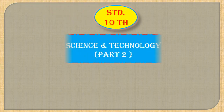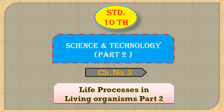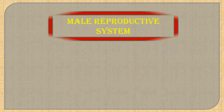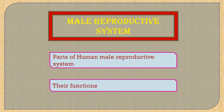Today, we are going to learn about a chapter from Standard 10, Subject Science and Technology, Part 2, Chapter number 3, that is Life Processes in Living Organisms, Part 2. From this chapter, we are going to study about a new topic, that is the Male Reproductive System. In this topic, we are going to learn about the parts of the Human Male Reproductive System and their functions.